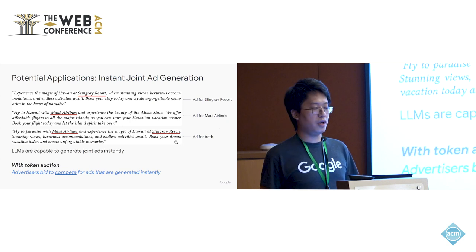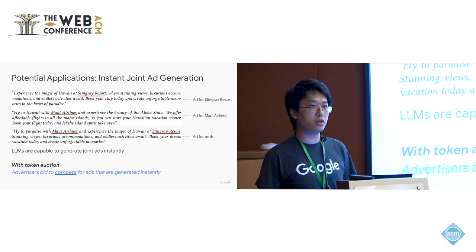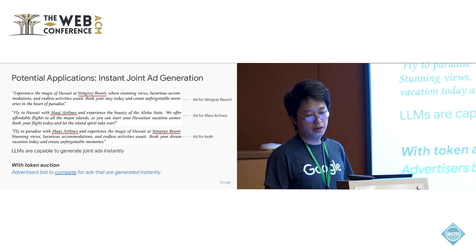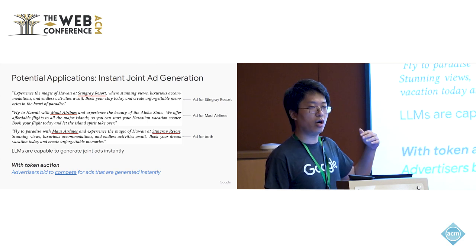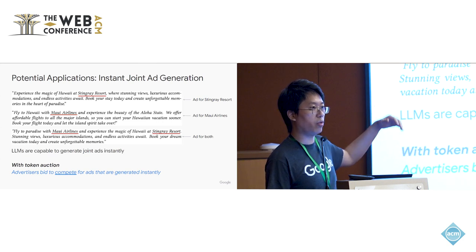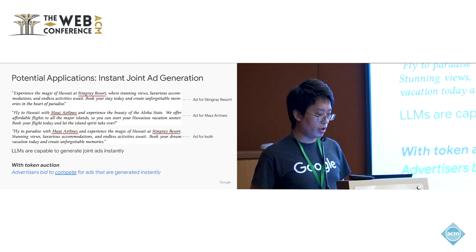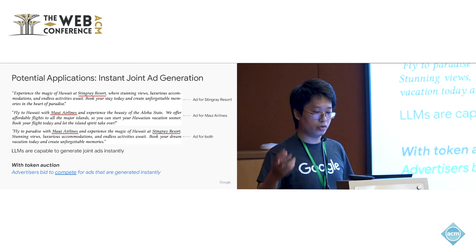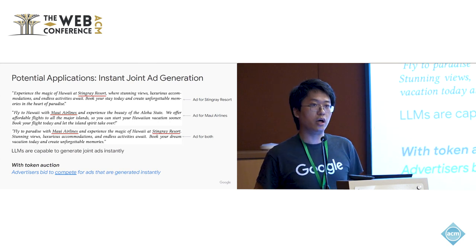Here is an example application: generating ads with competition. We show three examples from a standard LLM — you can write ads for a resort, for airlines, or for both. The challenge is: if an airline says they are willing to pay more money, how can you tell the LLM to increase focus on airlines in a joint generation? With our token auction design, the bid becomes a parameter to the generation process, ensuring advertisers can bid to compete for influence in the final common generation.